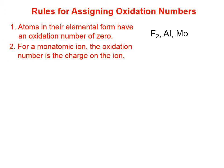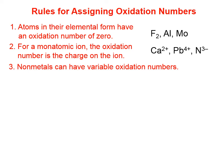Rule 2: for a monatomic ion, the oxidation number is the charge on the ion. For the calcium ion, the oxidation number is 2+; for the lead-4 ion, it's 4+; and for the nitride ion, it's 3−.